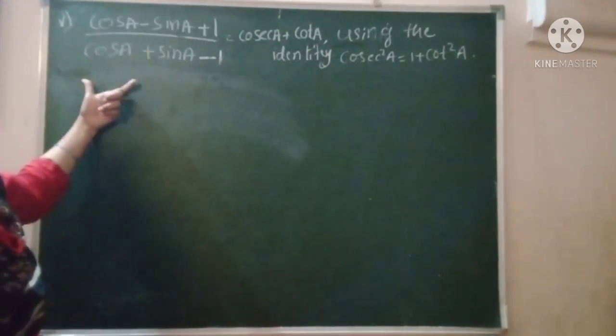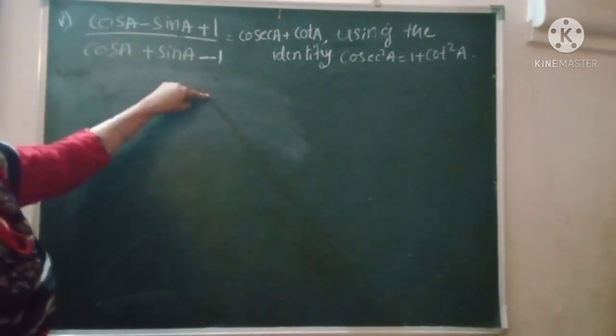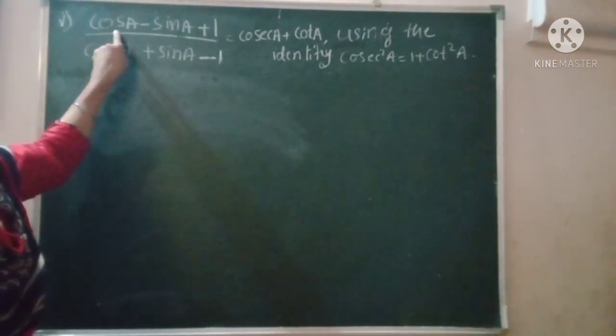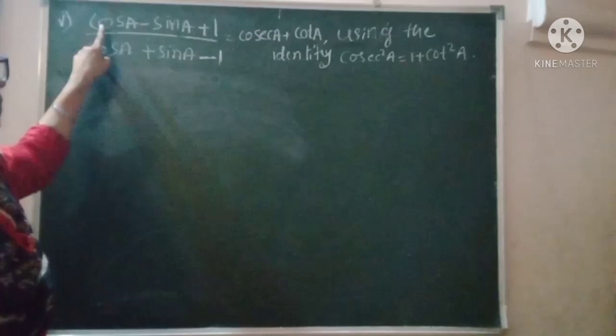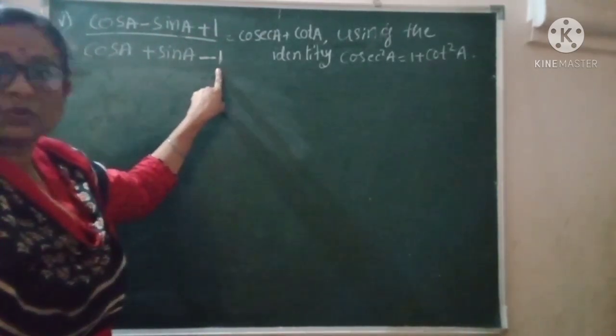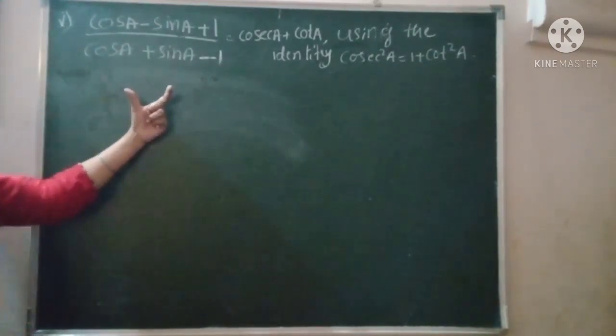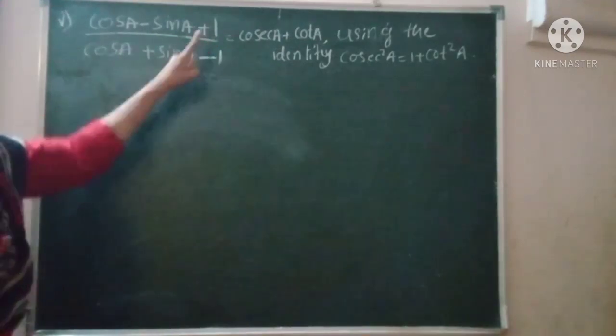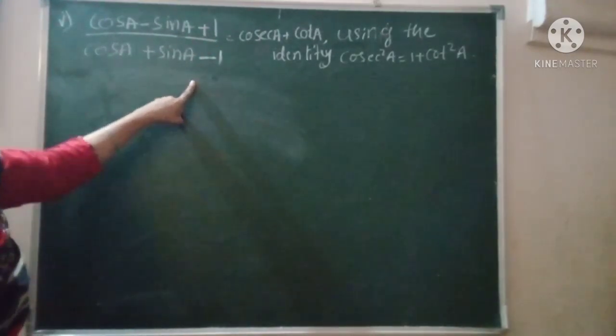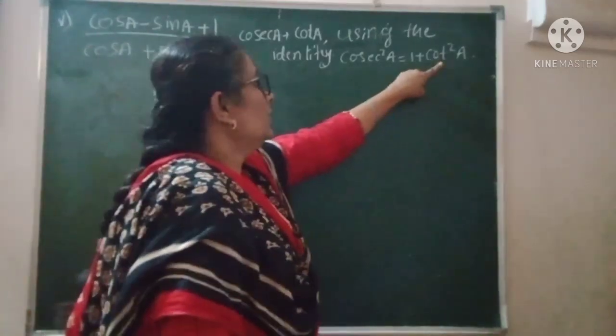To convert cos to cot, we divide by sin A. When we divide by sin A, cos becomes cot. Sin divided by sin becomes 1, and 1 divided by sin becomes cosec. For this problem, you have to divide both numerator and denominator by sin A so that we can get it in the format of the LHS.